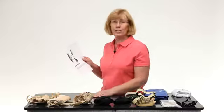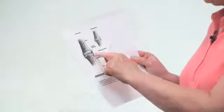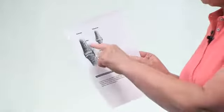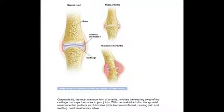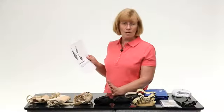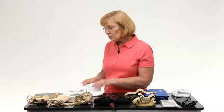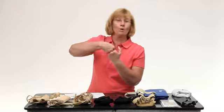On this handout, the normal joint on the left side shows two bones with cartilage between them. The joint is covered in synovial fluid, which is very viscous — a thick liquid, like oil in a car — that keeps everything lubricated. With osteoarthritis, shown at the top, the cartilage wears down and you start to get more bone on bone.